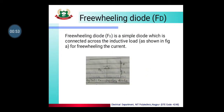Freewheeling diode, which is denoted by FD, is a simple diode which is connected across the inductive load, as shown in the figure, for freewheeling the current.